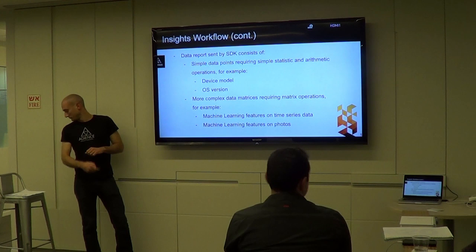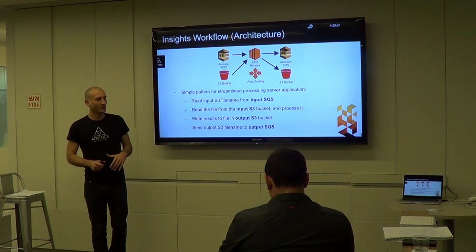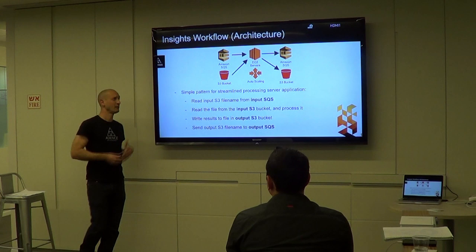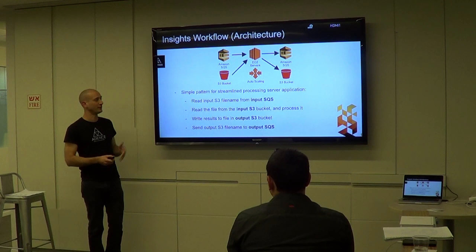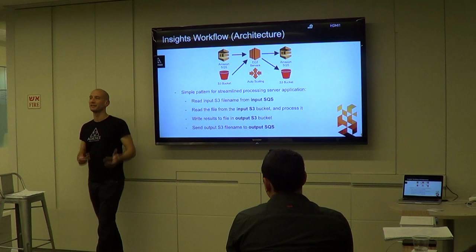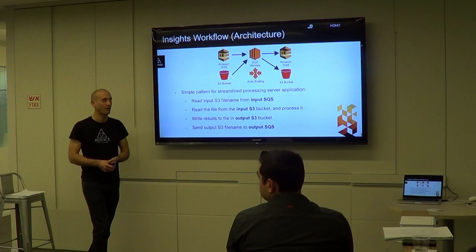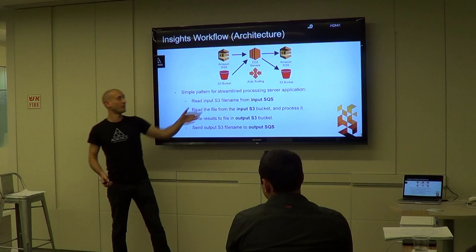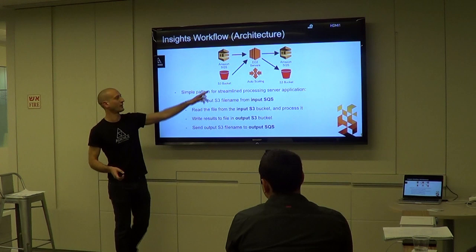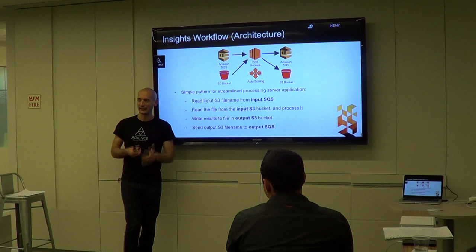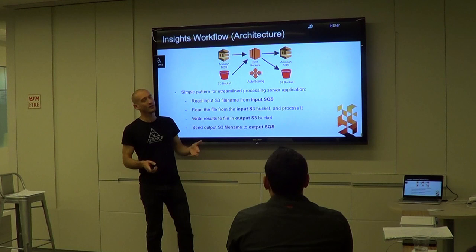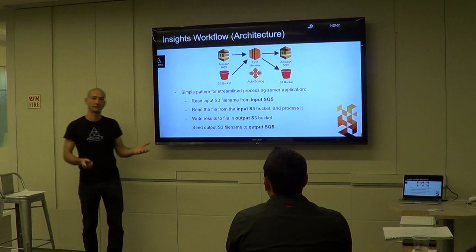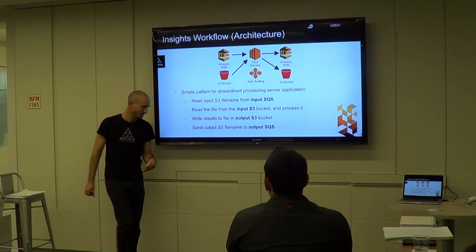We created a simple architecture pattern used multiple times, based on AWS services. It consists of an incoming stream of messages using Amazon SQS - a simple queuing service where you write a message on one end and read it on the other. The SQS message tells our instances the S3 key - the file name - to work on. The instance reads the file, does processing, writes results to an output S3 bucket, and sends an output SQS message saying the job is finished. We can autoscale here too, by monitoring CPU or queue size.